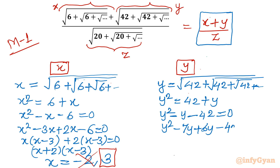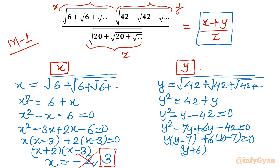So the equation becomes y squared minus 7y plus 6y minus 42 equals 0. Taking y common from the first two terms gives y minus 7, and taking 6 common from the last two terms also gives y minus 7. So the factorization is (y plus 6)(y minus 7) equals 0, giving y equals negative 6 or y equals 7. The negative value is rejected, so y equals 7 is accepted.